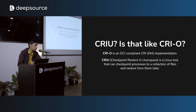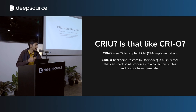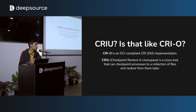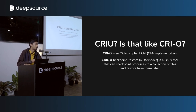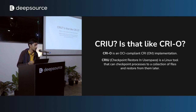CRIU is a Linux tool that lets you take any process running on Linux and write it to a bunch of files on disk. You can statefully capture a process and then restore it in the same state later on. The best part is you are not restricted to doing this on the same system — you can checkpoint a process on one system and restore it on a different system. In the context of Kubernetes, you can move processes across nodes using this.